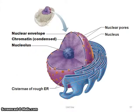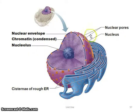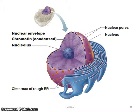Here's an example of what that looks like when it's blown up — a huge nucleus, and then a little nucleolus in the middle.